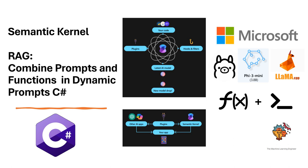Hi, welcome to my channel The Machine Learning Engineer. In today's video we continue with the Semantic Kernel, and today we are going to see how to build dynamic prompts combining prompts and functions. Essentially what we are going to build today is a RAG — Retrieval Augmented Generation — tool which we are going to be accessing an external source and get information to build dynamically an instruction to be sent to a prompt with information that we retrieve from an external source, not known to our LLM.